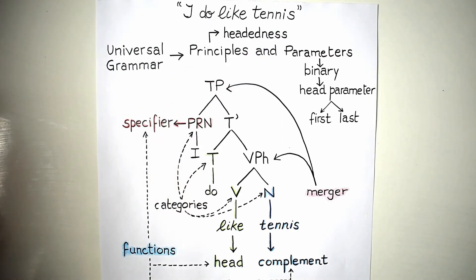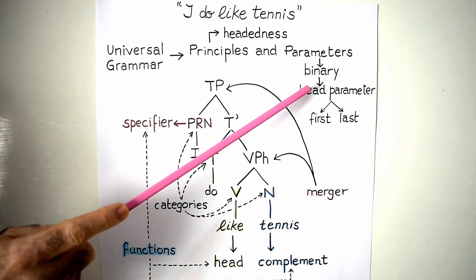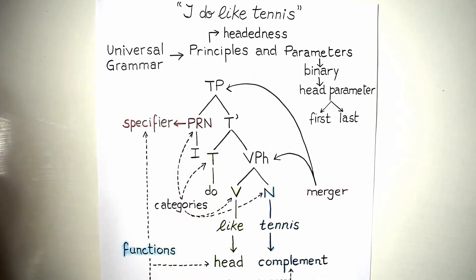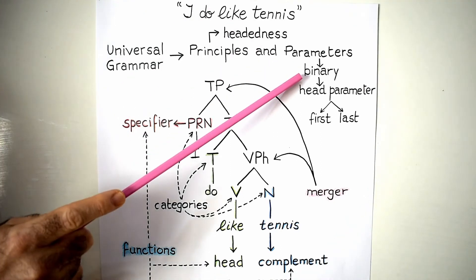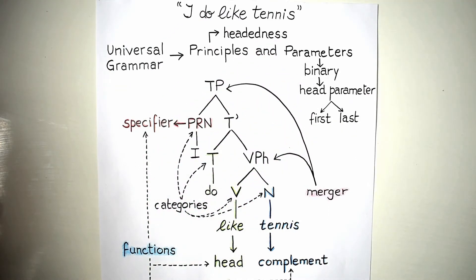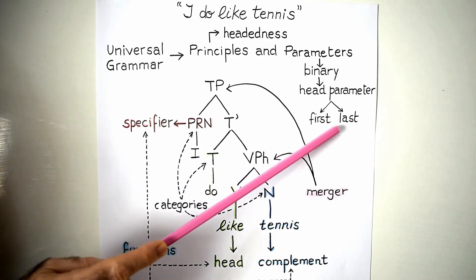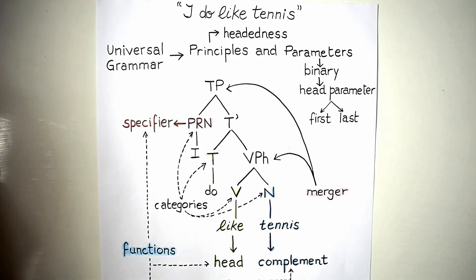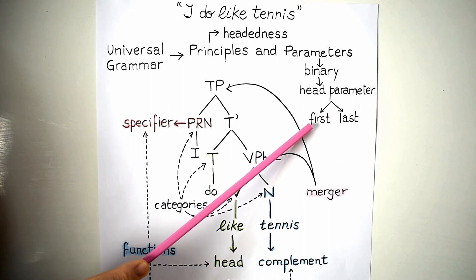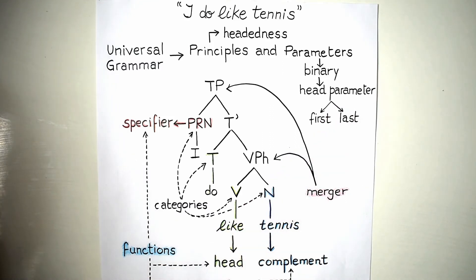This is what we call a parameter. According to Chomsky, there are important differences between languages, one of which is the parameter — that is, languages vary parametrically in a binary fashion. What is binarity? Binarity means that there are only two options: it's either head-first or head-last. There is no zero option, no third or fourth option — it's binary, just two options. So the difference between English and other languages as far as the head parameter is concerned is that English is head-first and languages such as Japanese are head-last. So let's go back to our phrase.